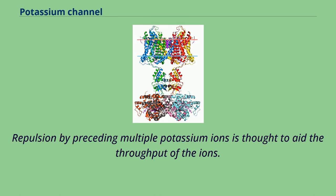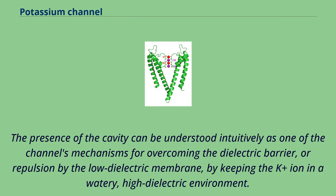Repulsion by preceding multiple potassium ions is thought to aid the throughput of ions. The presence of the cavity can be understood intuitively as one of the channel's mechanisms for overcoming the dielectric barrier — repulsion by the low dielectric membrane — by keeping the K+ ion in a watery, high dielectric environment.